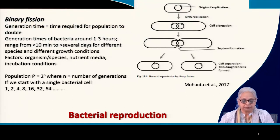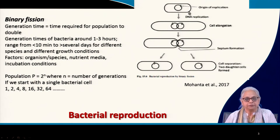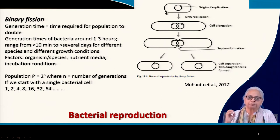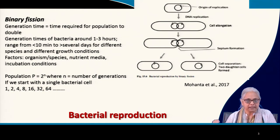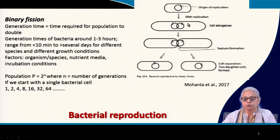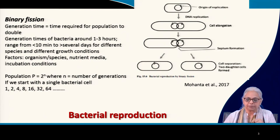We are going to start with bacterial reproduction. We already know that bacteria reproduce by binary fission. In binary fission we have a single bacterial cell — as seen at the top in this graphic — and the cell has a double-stranded circular DNA molecule. The first step in the reproduction process is replication of the DNA.